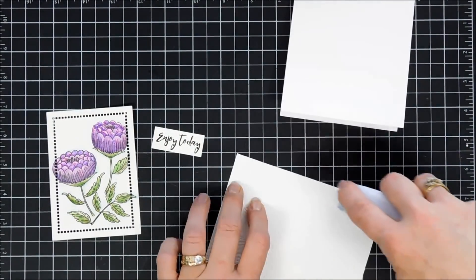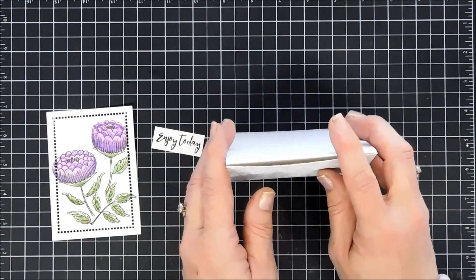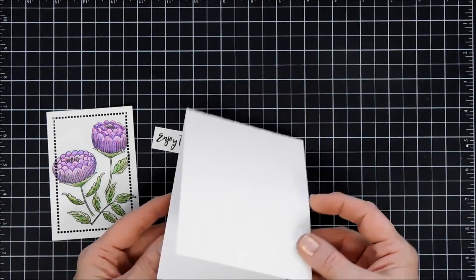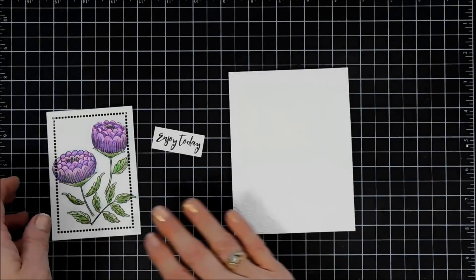I'll go ahead and tape this card front to my card base, which is the same size, 4 1/4 by 5 1/2 inches. I already stamped my sentiment with VersaFine Onyx Black ink. I stamped 'Enjoy Today.'